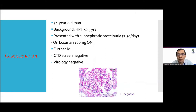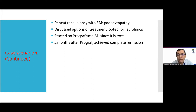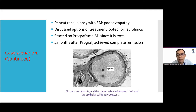A man with longstanding hypertension presented with sub-nephrotic proteinuria, was on optimal losartan 100mg daily, and all investigations were negative for CTD screening and virology. Light microscopy gave a minimal change disease picture with negative immunofluorescence. A repeat renal biopsy with electron microscopy reported podocytopathy. There were no immune deposits and there was characteristic widespread fusion of the epithelial cell foot processes. He opted for tacrolimus and achieved complete remission after four months.